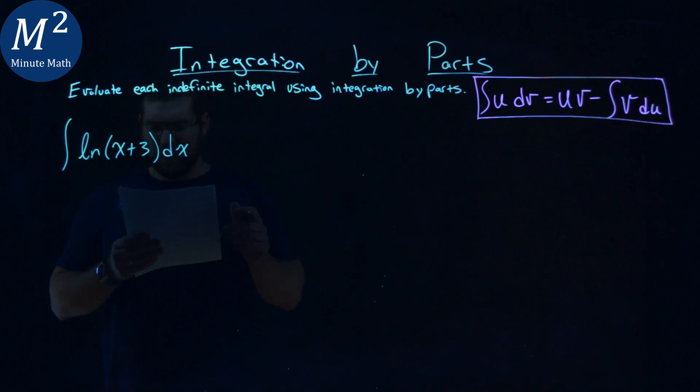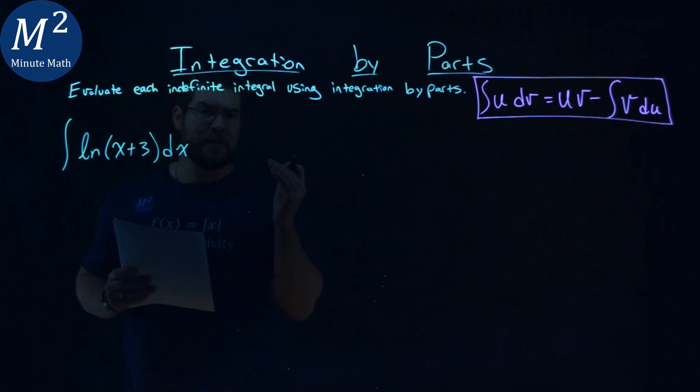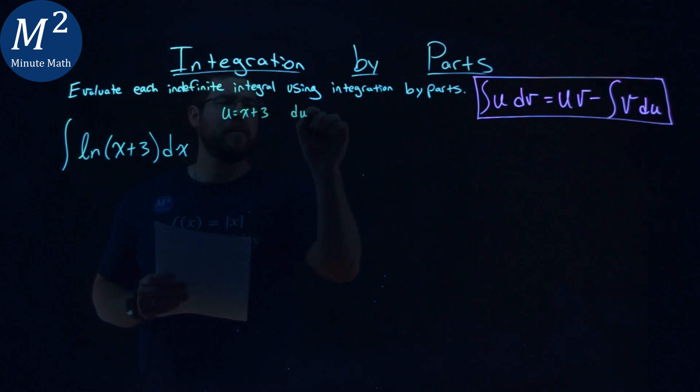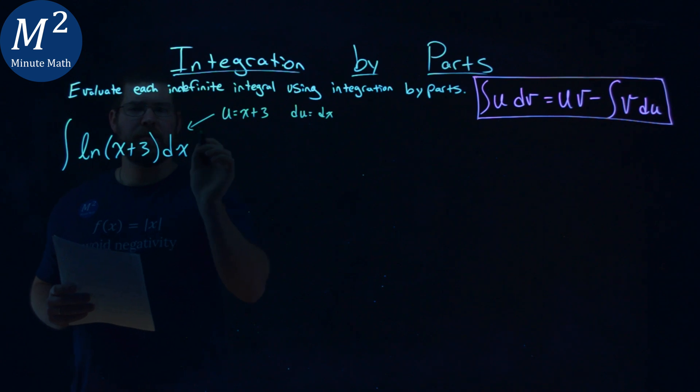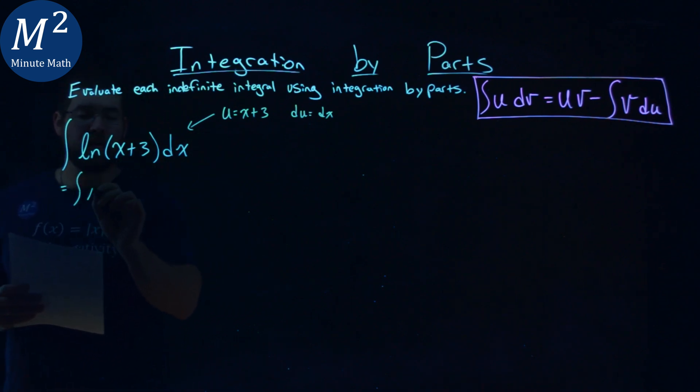I'm going to actually rewrite this in terms of u and a du. So first I have a u value of x plus 3, and a du value of just a dx. So with that being said, we're going to apply that here, and we have this equal to the integral natural log of u du.